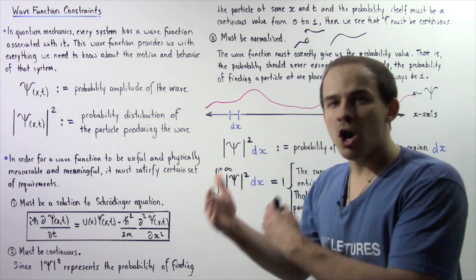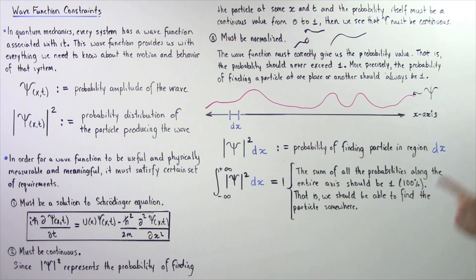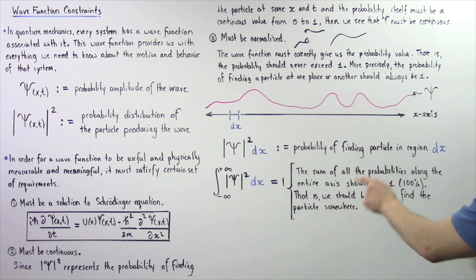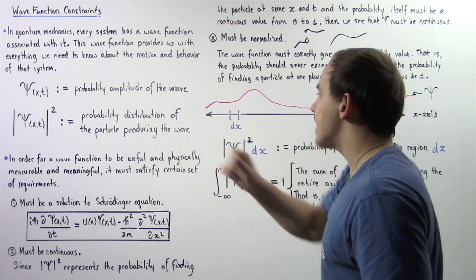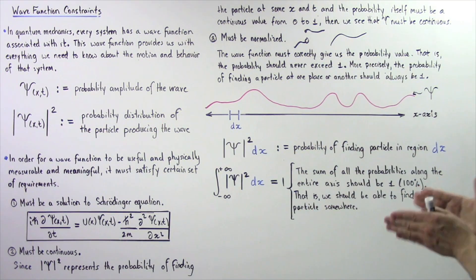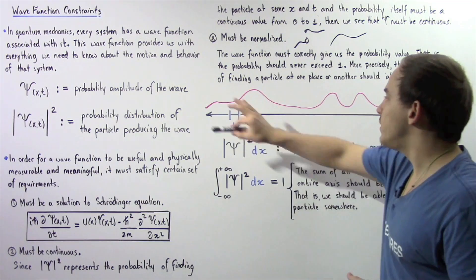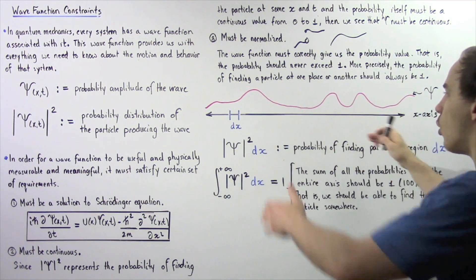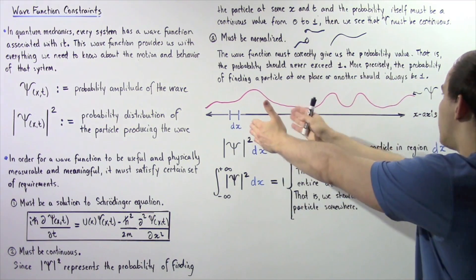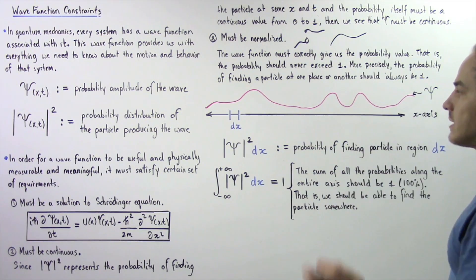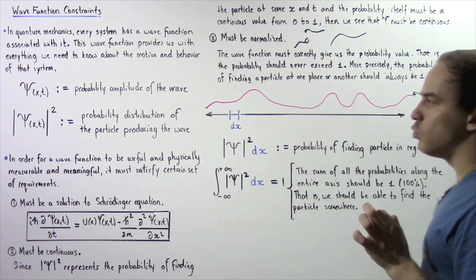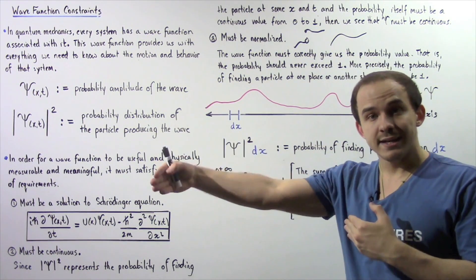The total probability should be 100%. This means we should be able to find our particle somewhere along the x-axis — it must be somewhere. When we sum up all these probabilities, the total probability must equal 1. It cannot exceed 1, and it cannot be anything less than 1.